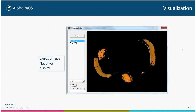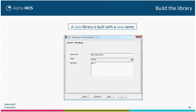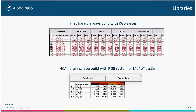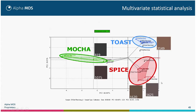You have the yellow cluster here. If you want to create a model, you will save the result under a new library. The first library will be created in RGB, and then after clustering you will have this kind of result. You can do multivariate statistical analysis of these results — benchmarking, quality control for color analysis — the same way as for electronic nose using AlphaSoft.